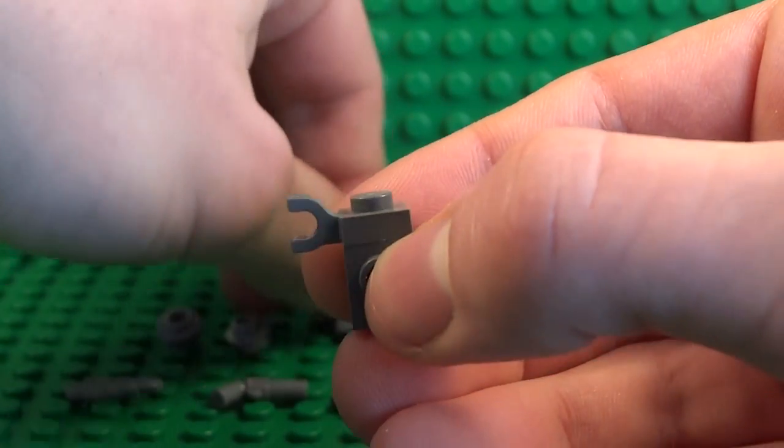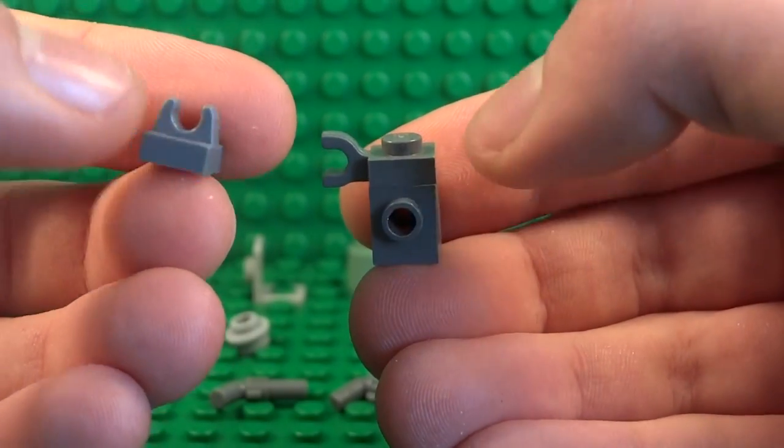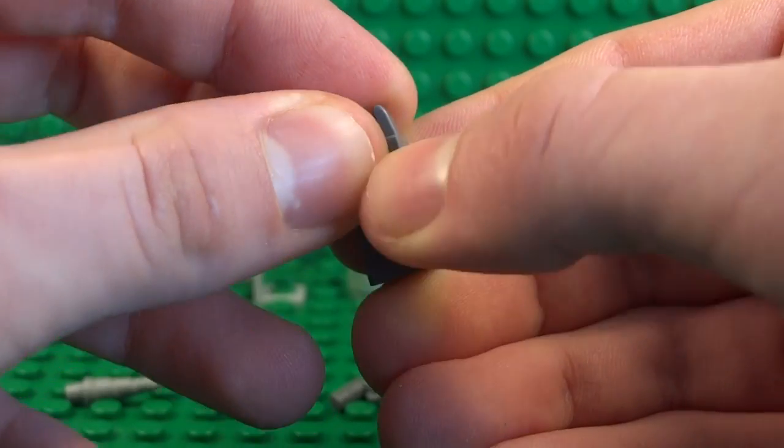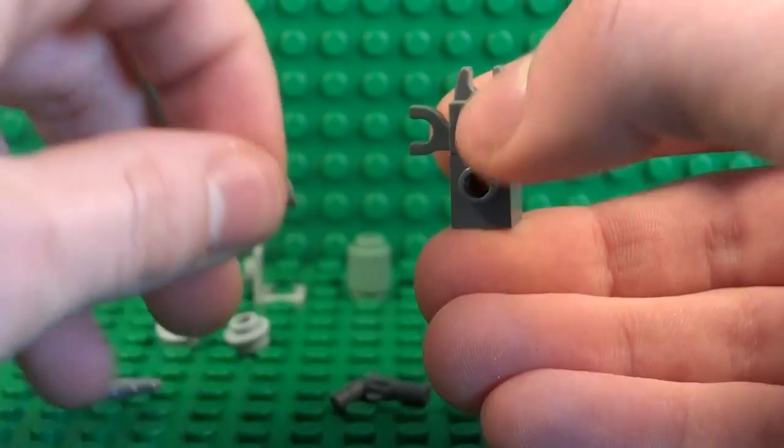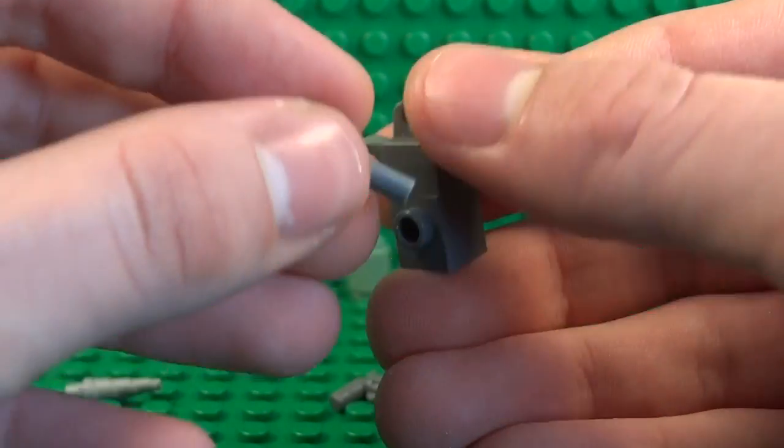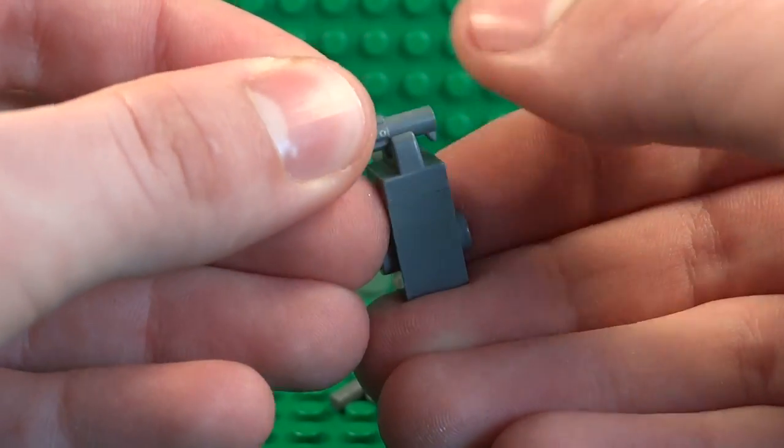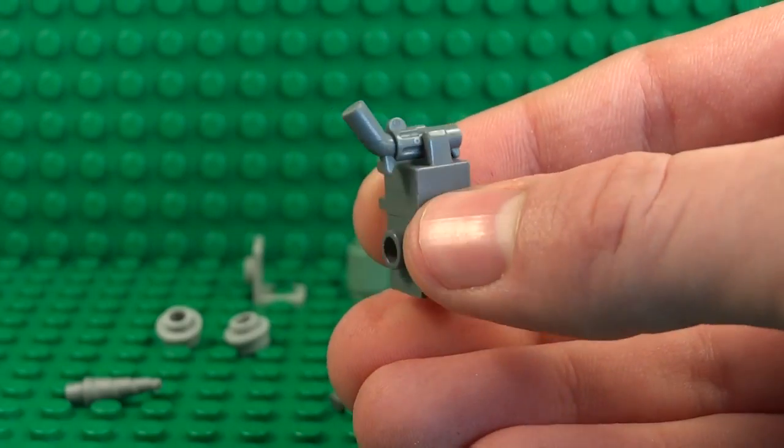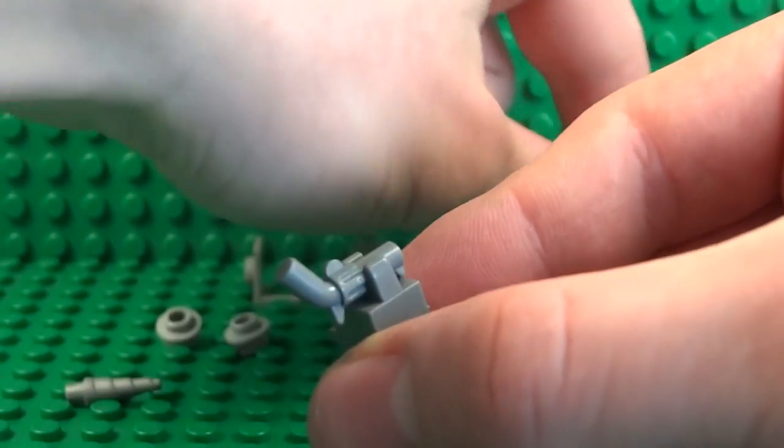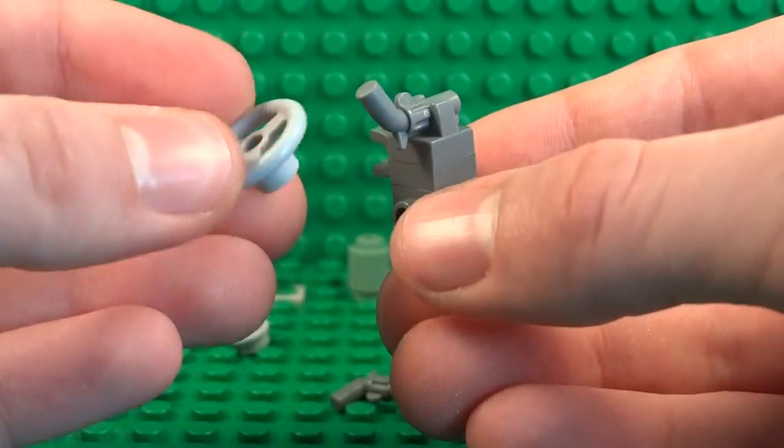And then on top of that you take the 1x1 tile with the clip on top of that, attach that there. And you can take a Lego revolver piece and just attach that upside down onto the clip.